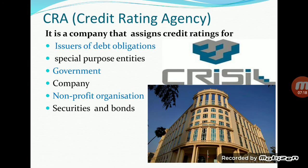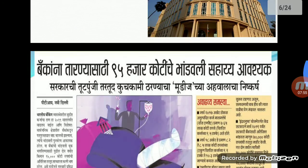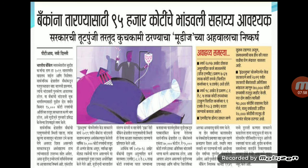A credit rating agency is a company that assigns credit ratings for issuers of debt obligations — such as debentures and bonds — for special purpose entities like banks or institutions, governments, companies, non-profit organizations, securities, and bonds. These are the categories to which credit rating agencies allot or provide credit ratings.